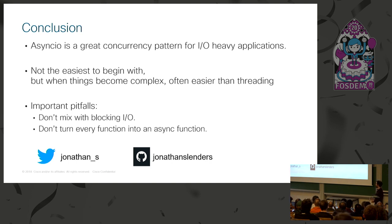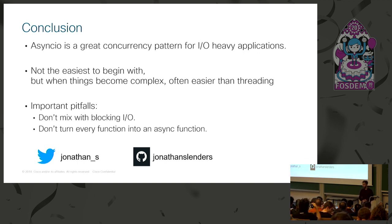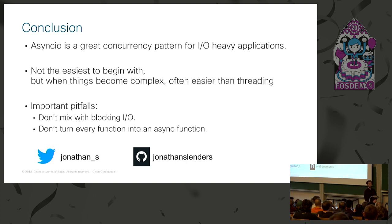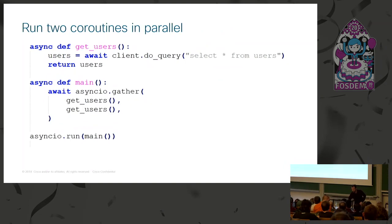To conclude: asyncIO is a great concurrency pattern for IO-heavy applications — not so much for CPU-intensive ones, but if you're dealing with a lot of IO and many connections, asyncIO is great. It's not the easiest to start with honestly, but when things get more complex it's much easier than threading to get right. The important pitfalls to remember: don't mix asyncIO code with blocking IO unless you use an executor, and don't turn every call into an async call. asyncio.gather can take as many coroutines as you want as positional arguments.